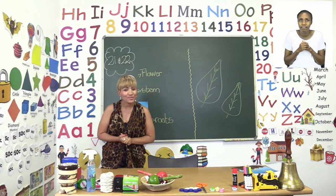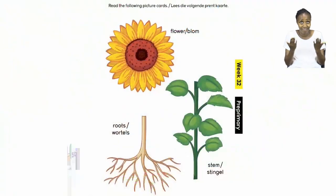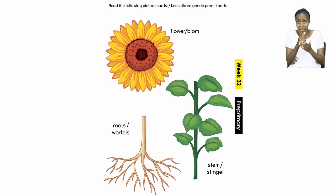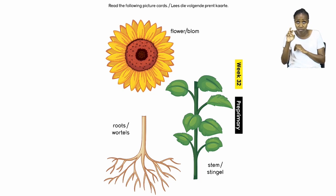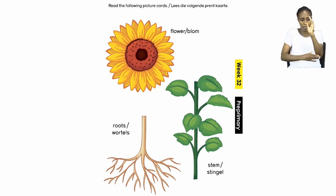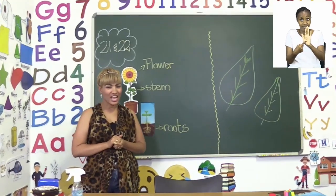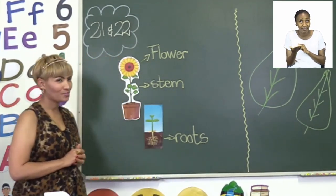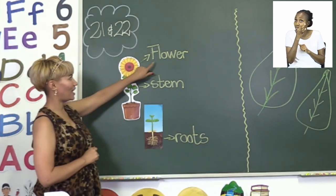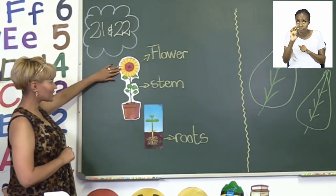Let's start this part of our lesson on page 21. Here it says that you have to read the following picture cards. You will see a picture of a flower first, then you have some roots, and you also have a stem. On the board I also have some pictures that show those parts. Now let's look at them one more time — over here we have a flower. Can you all see the flower?